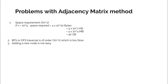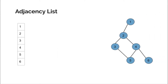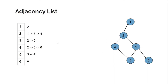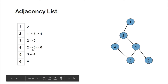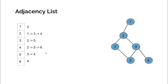Instead of the matrix method we use the adjacency list method. For each node we prepare a list — the adjacency list — where we keep the list of all nodes to which the current node is connected. For example, in the list of node 2 there would be three nodes since node 2 is connected to 1, 3, and 4. Node 1 is connected to node 2 only, and node 4 is connected to 2, 5, and 6.